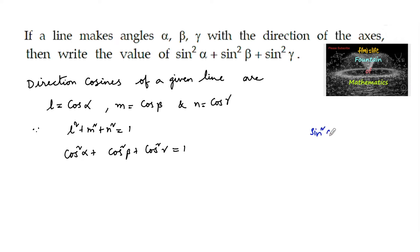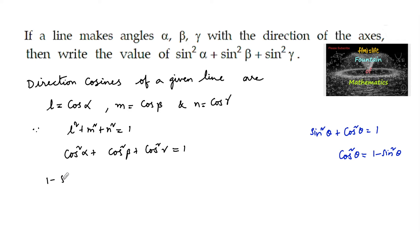Using the identity sin squared theta plus cos squared theta equals 1, we get cos squared theta equals 1 minus sin squared theta. So cos squared alpha equals 1 minus sin squared alpha, and cos squared gamma equals 1 minus sin squared gamma.